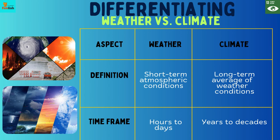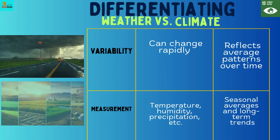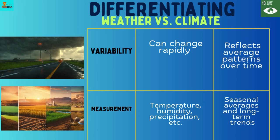Time Frame: Weather spans hours to days, while climate spans years to decades. Variability: Weather can change rapidly, while climate reflects average patterns over time.